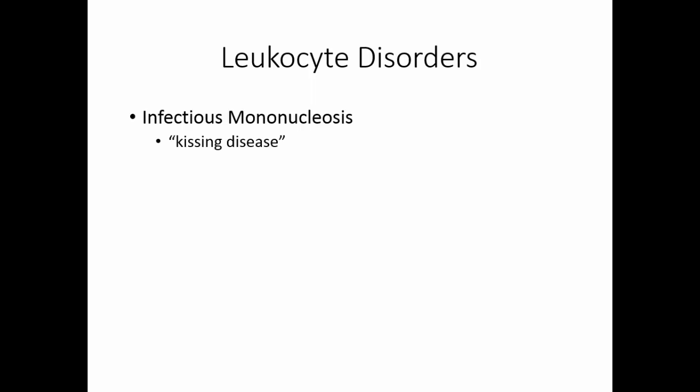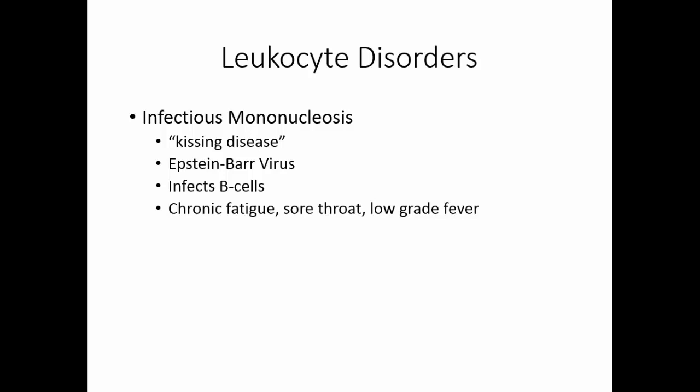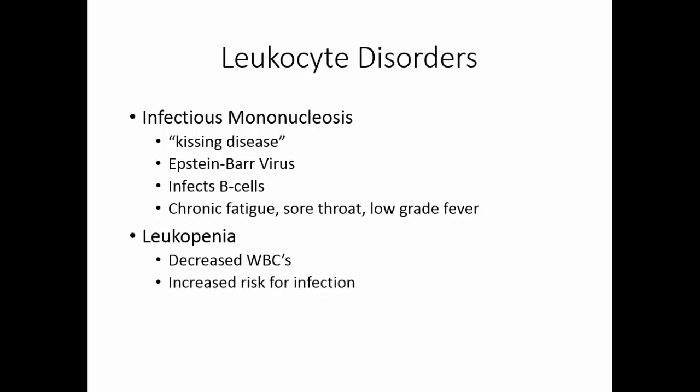Infectious mononucleosis, sometimes called the kissing disease because it spreads primarily in saliva, is actually an infection with the Epstein-Barr virus. The cells infected are the B lymphocytes. People with mononucleosis have chronic fatigue, sore throat, and a low-grade fever. Because it tends to occur in adolescence, it is frequently misdiagnosed initially as strep throat, and when antibiotics don't work, they may then test for mononucleosis. It is very chronic and takes months to resolve. Leukopenias are a decreased white blood cell count creating great risk of infection; they are most commonly drug-induced, with the most common form resulting from chemotherapy.